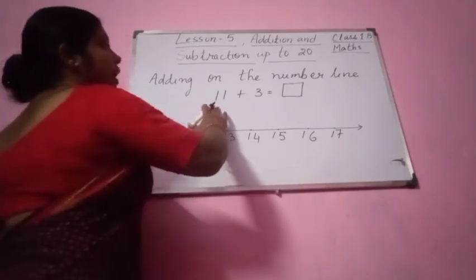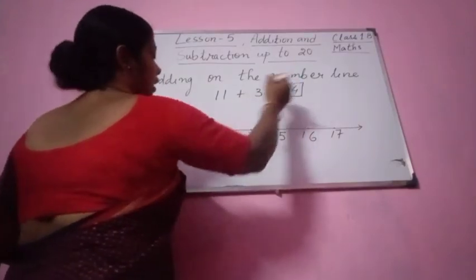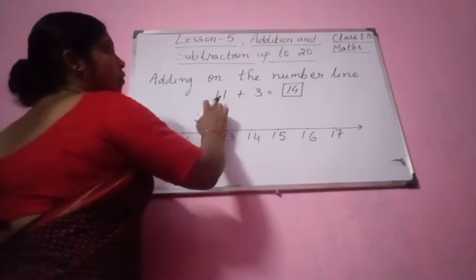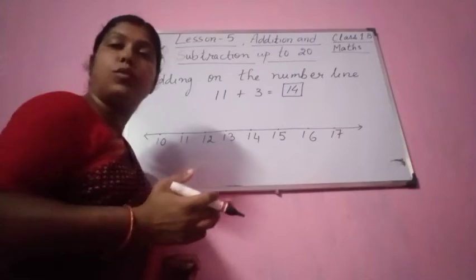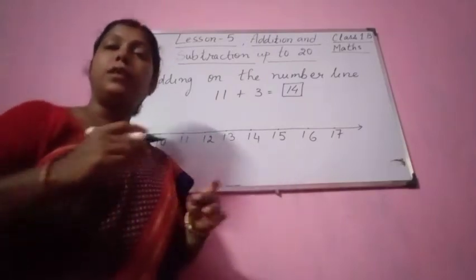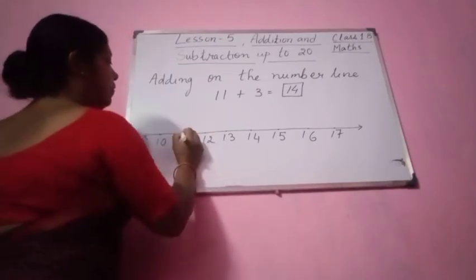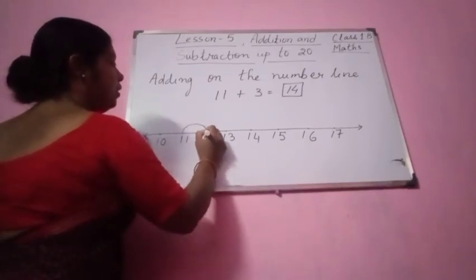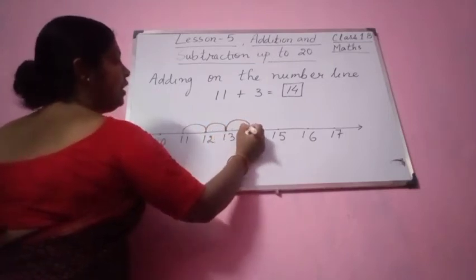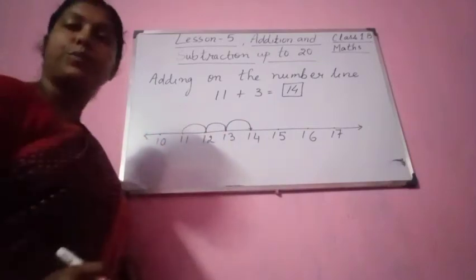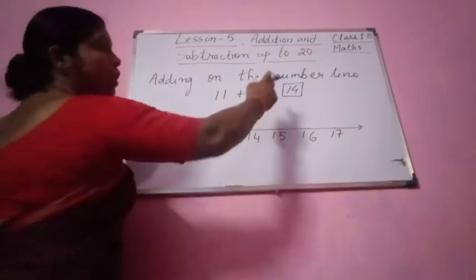Because you already know, first you add: 11 plus 3 equal to how much? 11 plus 3 equal to 14. So from 11 you start, plus 3 — more 3 places you go. From 11, after that more 3 places you go. See here: 11 is here, so 1, 2 and 3. Put an arrow here. You see 11, 12, 13, 14. 14 is the answer.